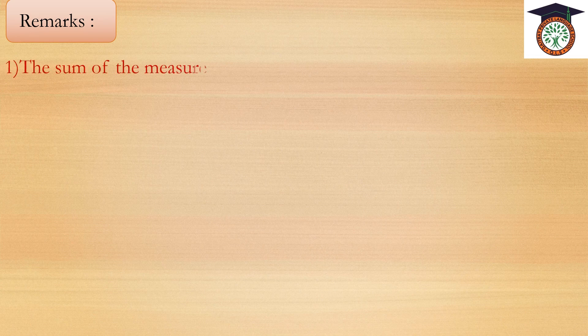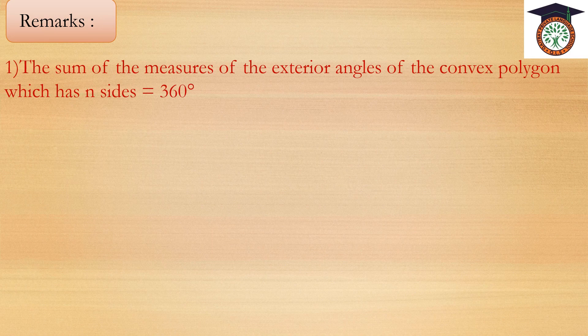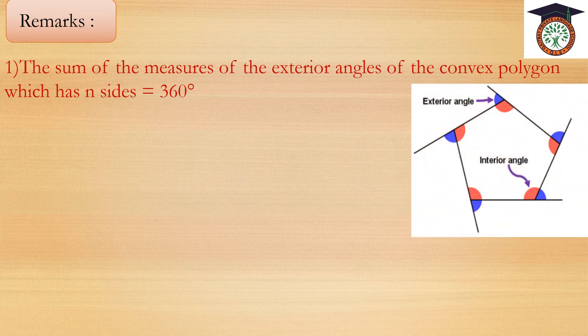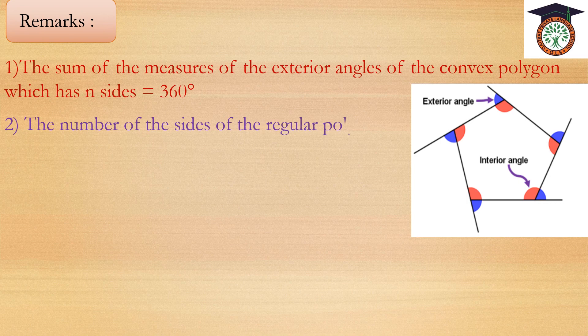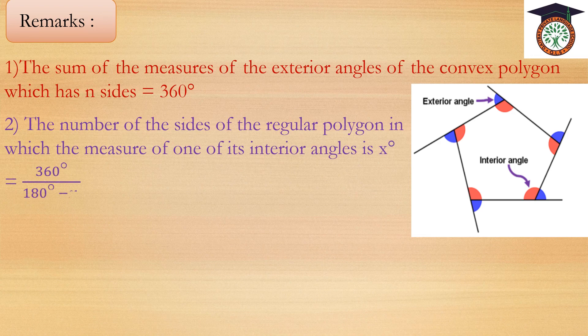Remarks: Number one — the sum of the measures of the exterior angles of a convex polygon with n sides equals 360 degrees. Number two — the number of sides of a regular polygon in which the measure of one of its interior angles is x degrees equals 360 degrees over (180 degrees minus x degrees).